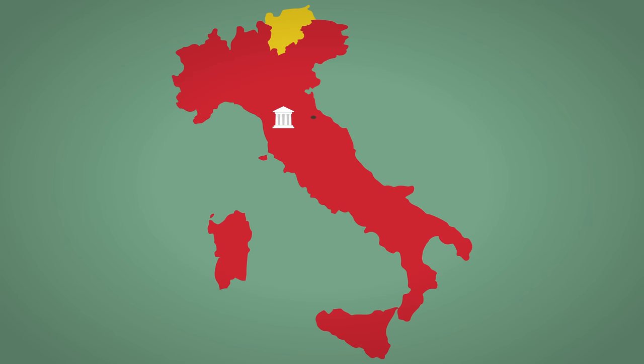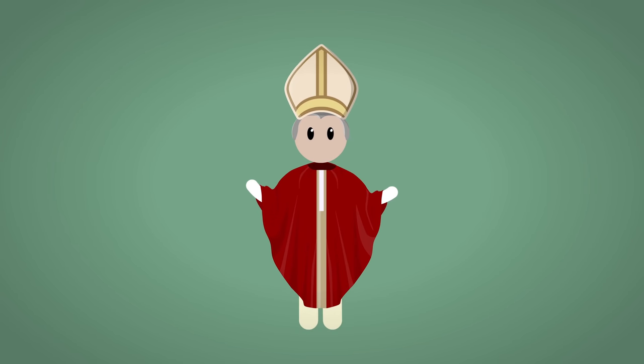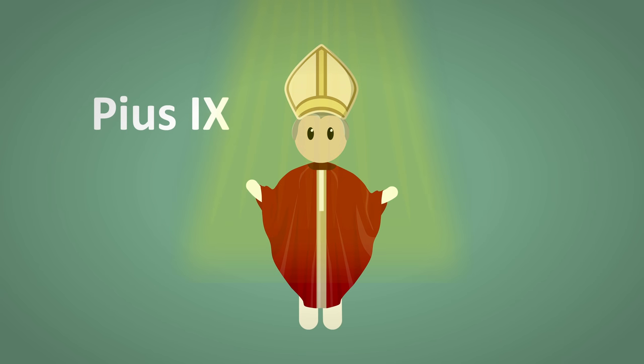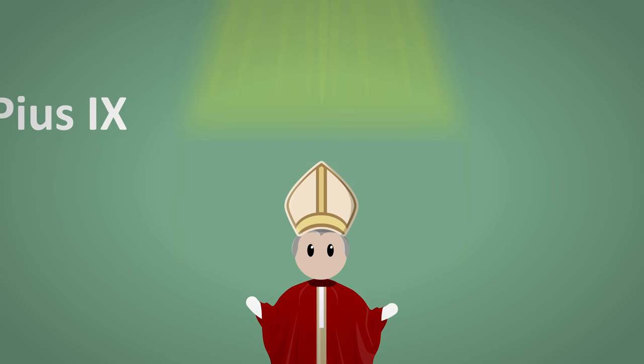Rome was now the capital of Italy and the government moved into the city. Pope Pius IX was also beatified — the first step towards becoming a saint. It seems like all the popes are still bitter about losing their territory to Italy, as they continue to make any person who opposed Italy into a religious icon.